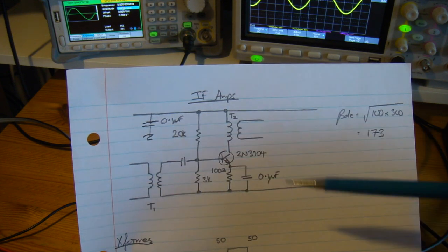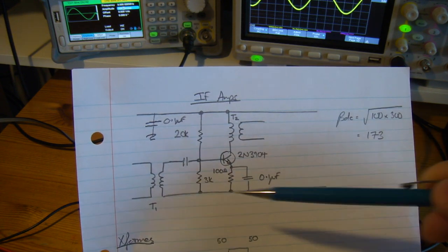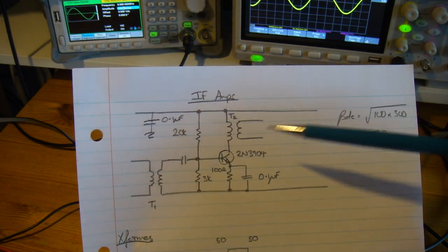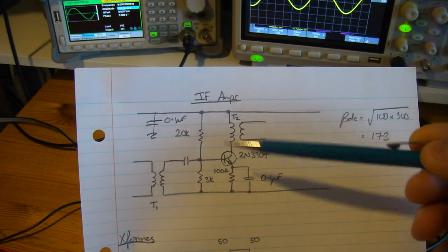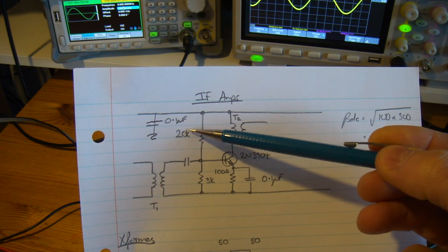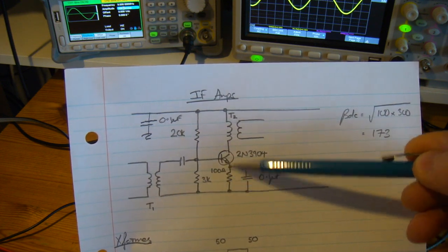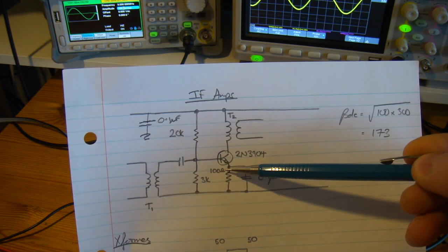I haven't gone through the maths in this particular page here because it's on a previous video and on the blog, but it works out to be 20k ohms for R1, 3k ohms for R2, and then an emitter resistor of 100 ohms.